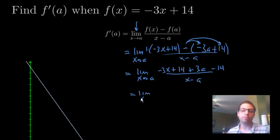Okay, after you simplify, well I shouldn't say simplify, distribute, get rid of parentheses, see if there's anything that cancels, hopefully stuff does. In this case, the 14s cancel, leaving us -3x + 3a on top, and x - a on the bottom.